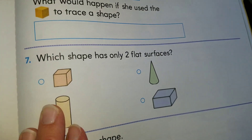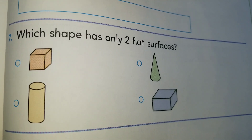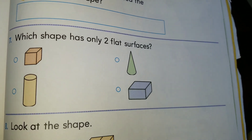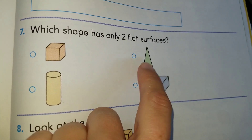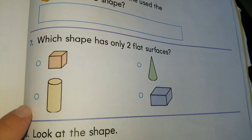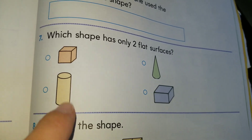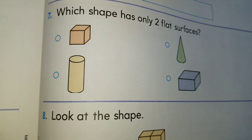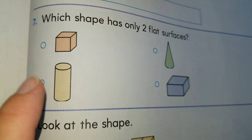Let's take a look at question number seven. Which shape has only two flat surfaces? We just spoke about it. Is it the cube? Is it the cylinder? Is it the cone? Or the rectangular prism? I say it's the cylinder — it has one flat surface on the top and one flat surface on the bottom, that's why it can stand. The only shape that can stand with either side, besides our square shapes, is the cylinder.